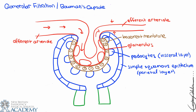Whenever blood flows from a wide vessel into a more narrow vessel, there is backing up of blood — similar to two lanes of traffic merging into one, where vehicles slow at the merge point. Because blood flow slows leaving the efferent arteriole, we get some backing up of blood into the glomerulus.